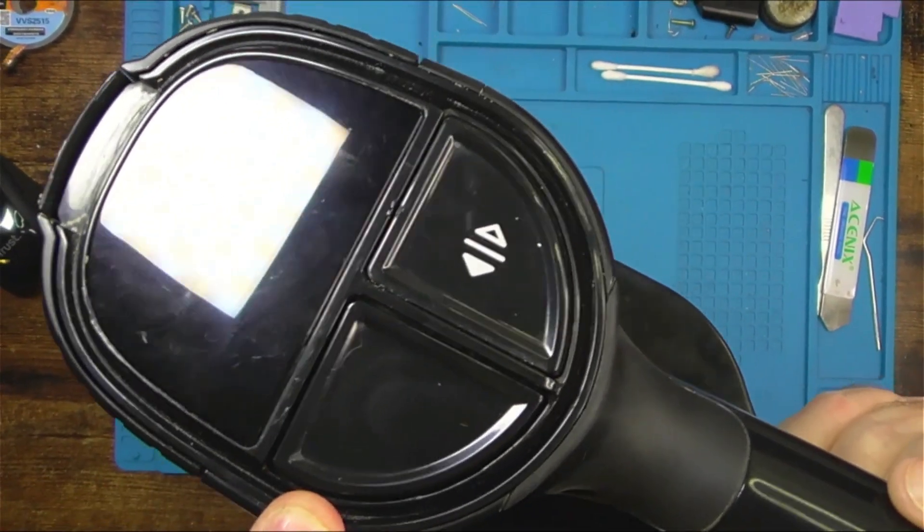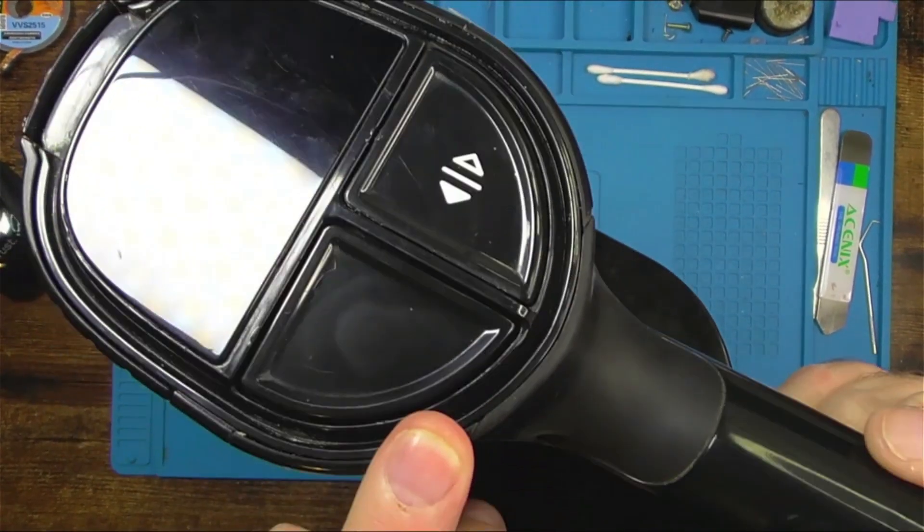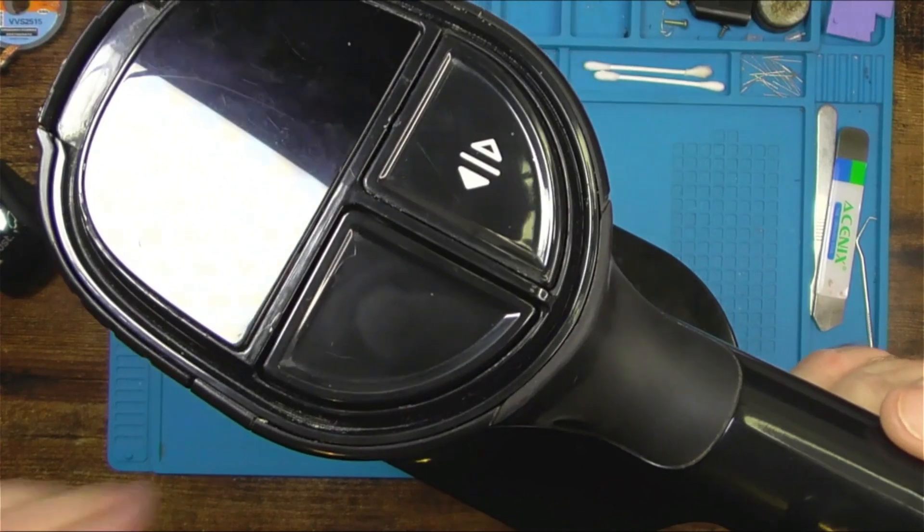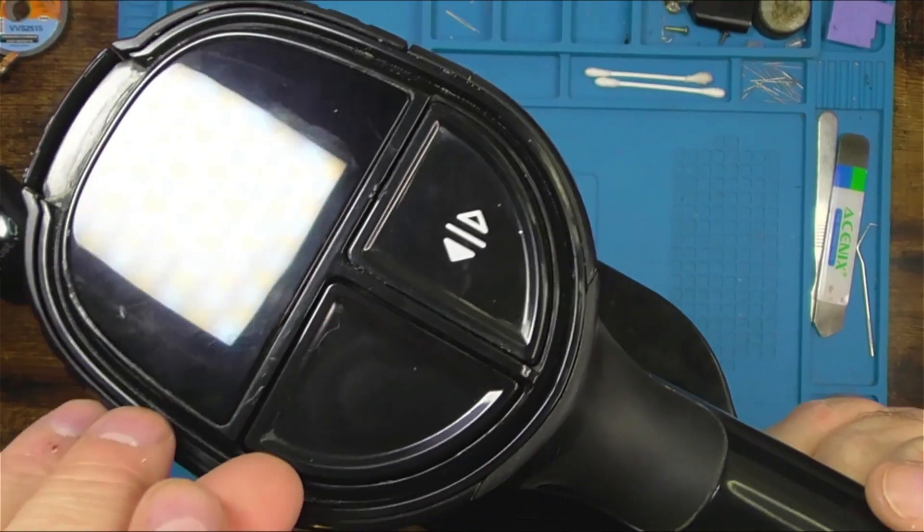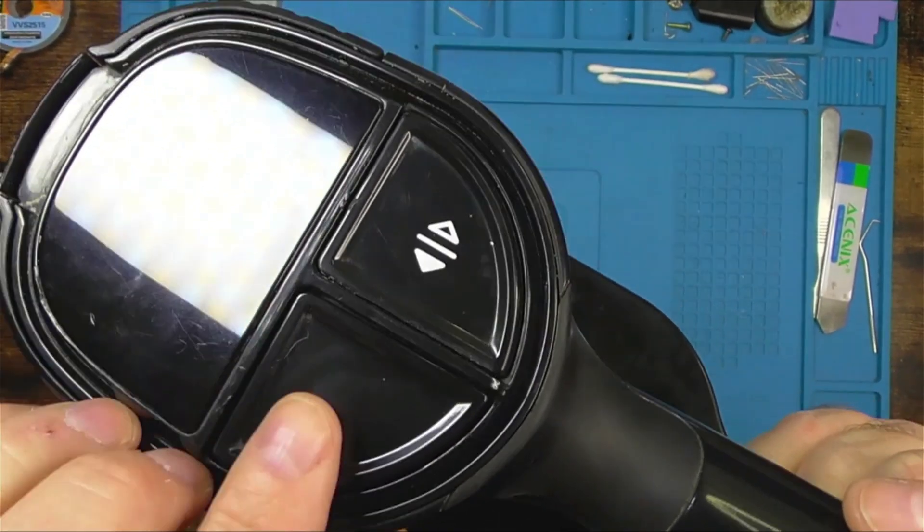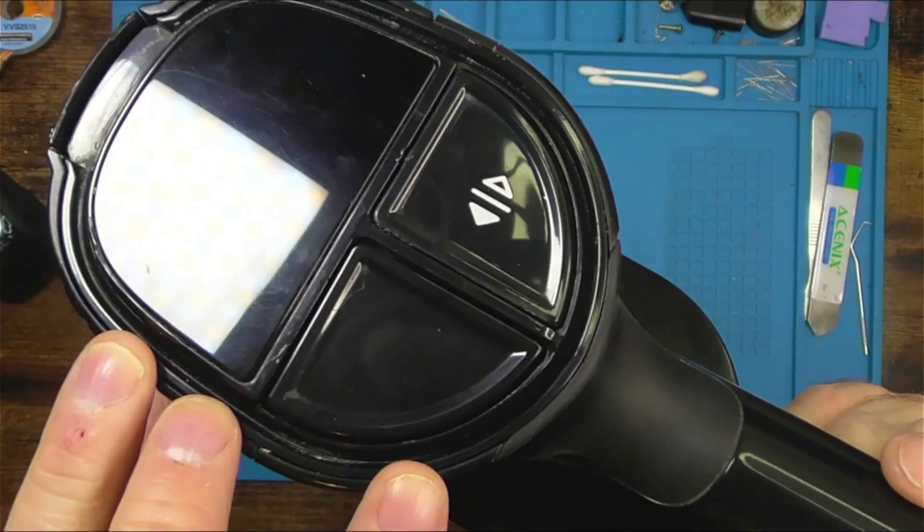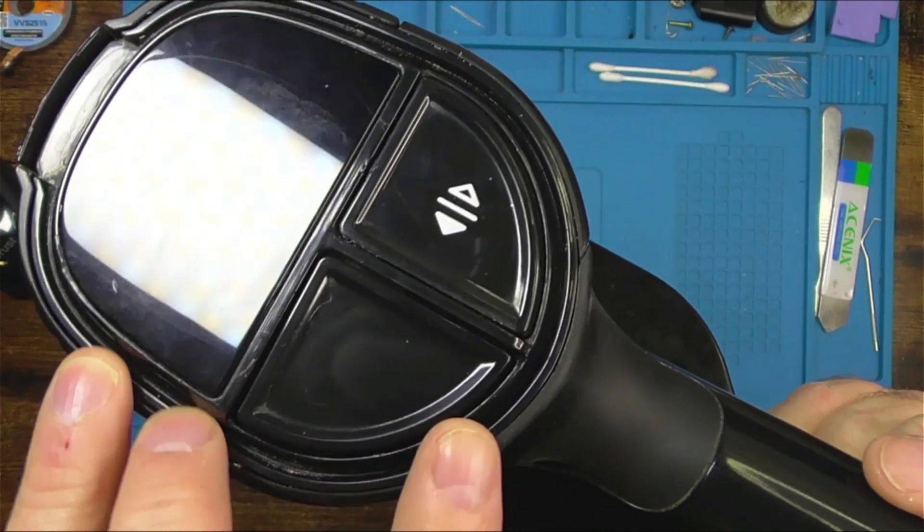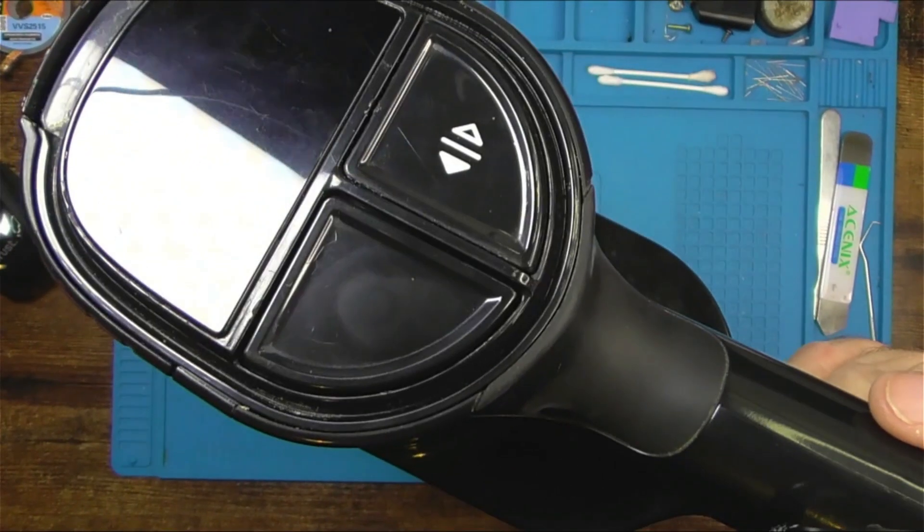So if you have one of these Shark vacuums and you're having problems with the on-off switch and you're beyond the warranty period, it's just a case of getting a flat tool. A screwdriver works. Flip the top part off and do something similar to that and it'll get back up and running.